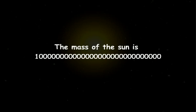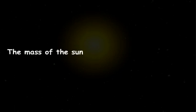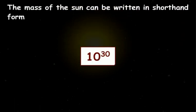So, we need to write this large number in a short and simple form. The mass of the sun can be written in the shorthand form like this. We call this shorthand form an exponential notation.